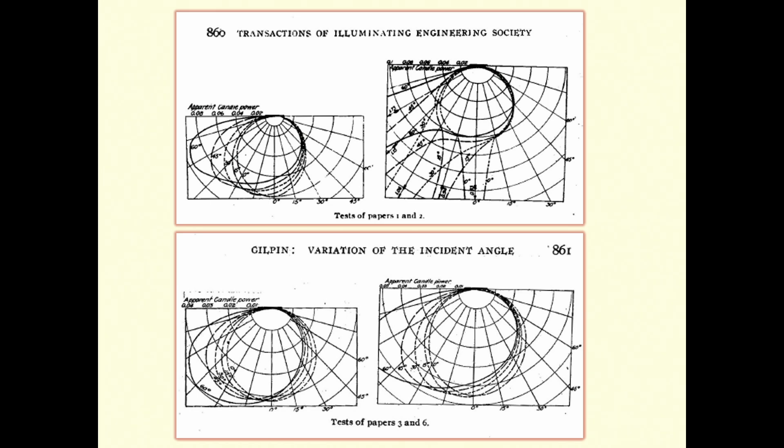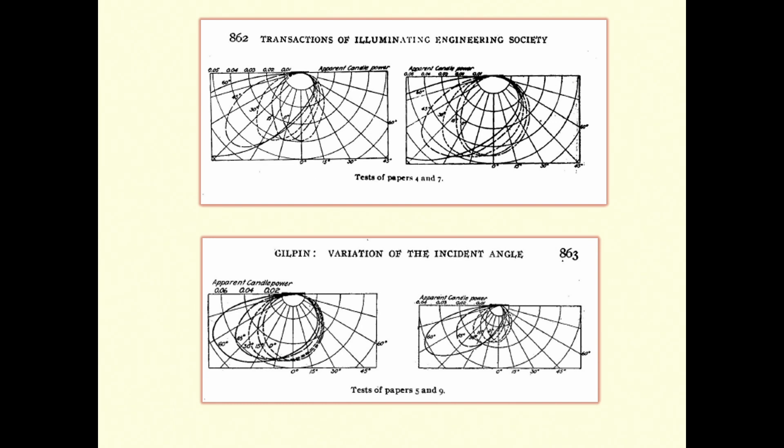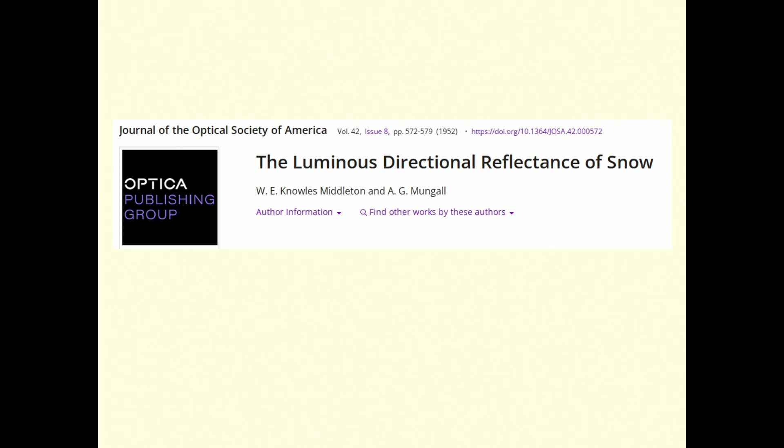The first kind of score was the proceedings of the Illuminating Engineering Society. That sounds promising. Mostly about how to make lighting fixtures, but finally I scored with this effect of the variation of incident light. This had experimental data from 1910. I thought, well, I can digitize this and use some sort of table lookup. I kept looking around. Here's my next score, Luminous Directional Reflections of Snow from the University of Minnesota. They know snow.